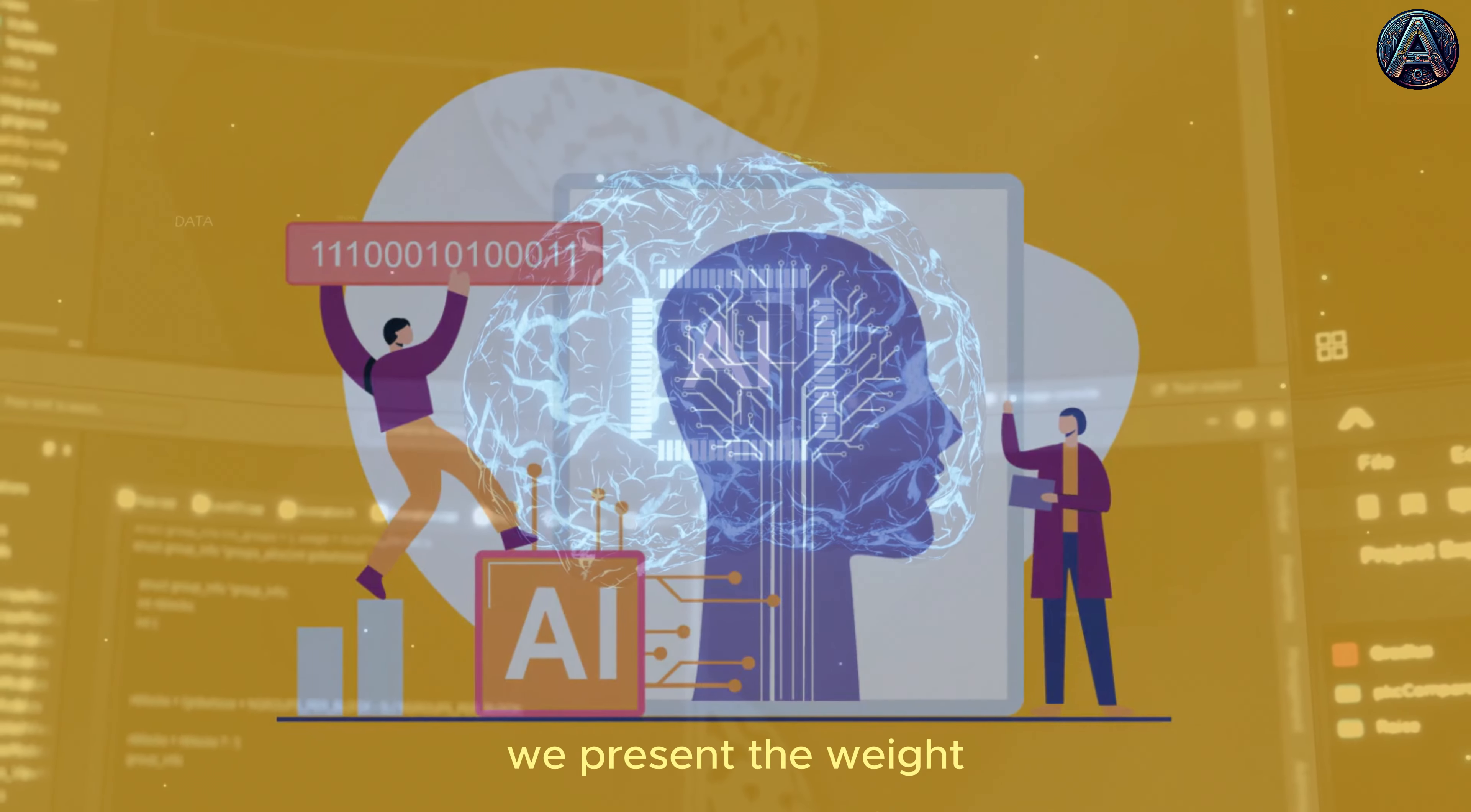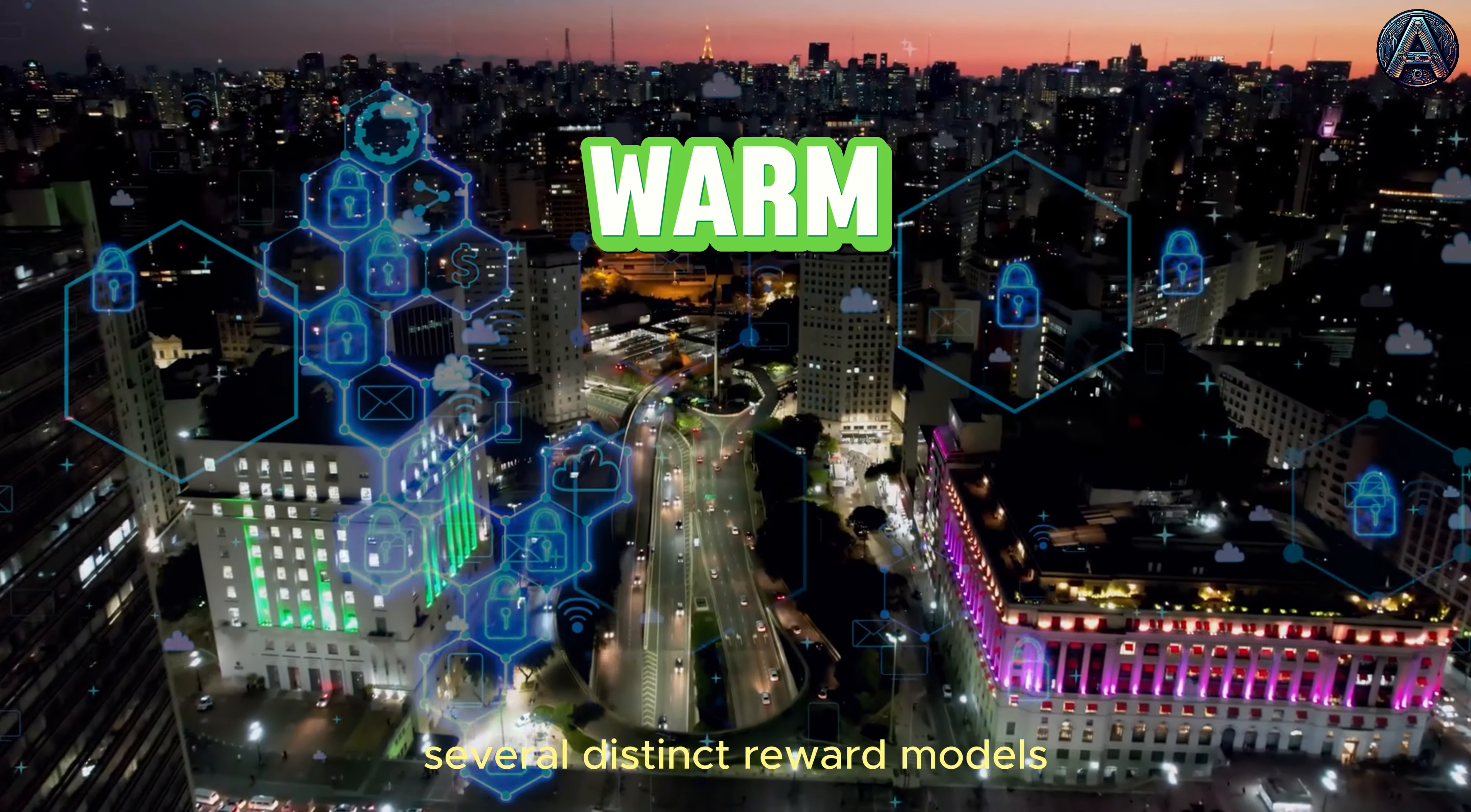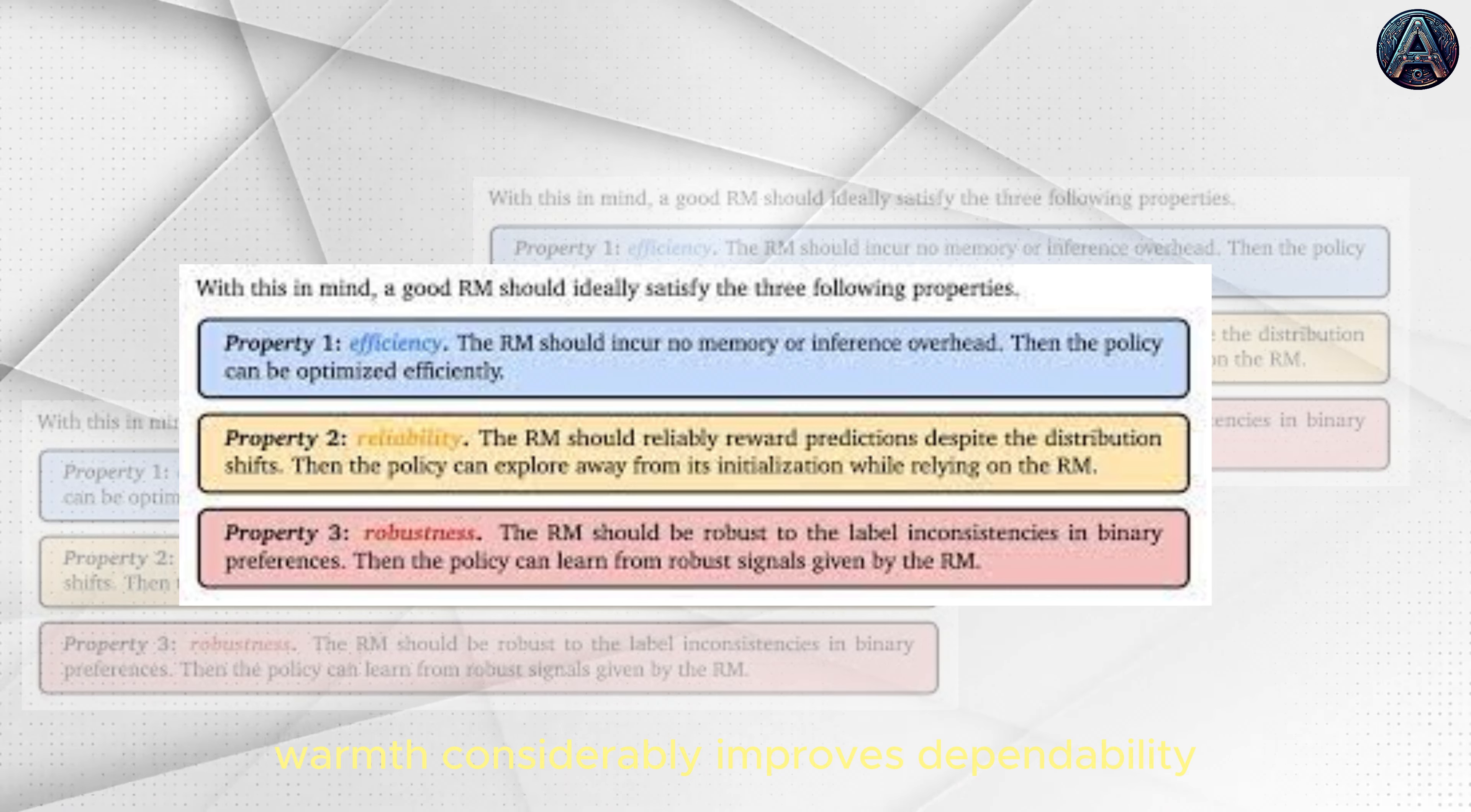We present the Weight Averaged Reward Models from DeepMind. WARM is a creative method that combines several distinct reward models, each with minor modifications, to provide a more reliable and balanced system. By aggregating these types of models, WARM considerably improves dependability and performance.